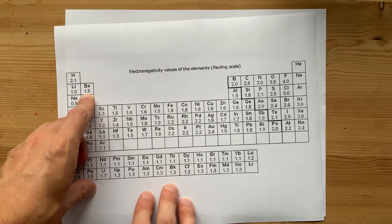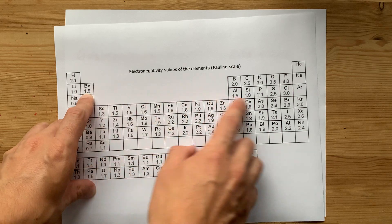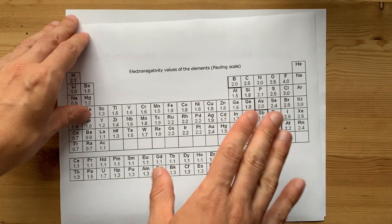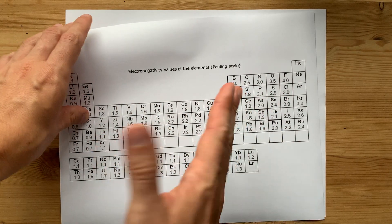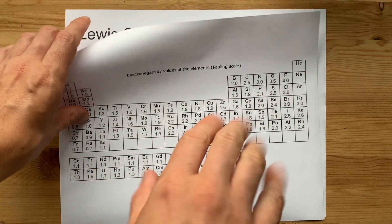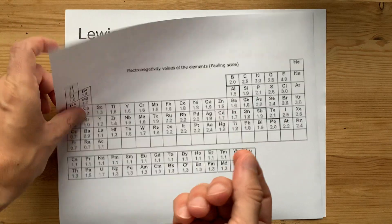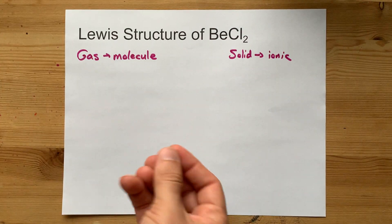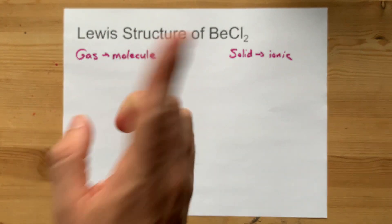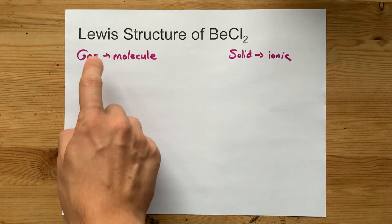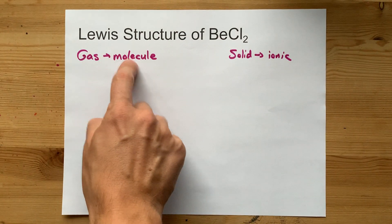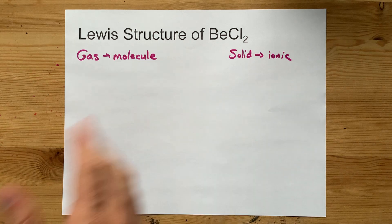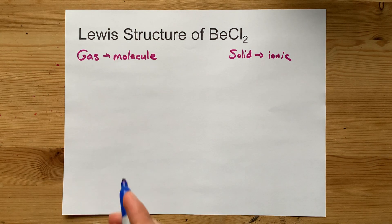Beryllium's here at 1.5 and chlorine's here at 3. We usually say that the threshold between molecular and ionic is 1.7, and this is really close. Your teacher probably wants you to say that it's a covalently bonded molecule, so let's do that one first.